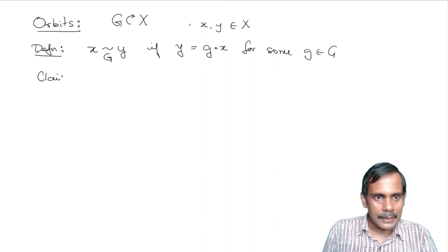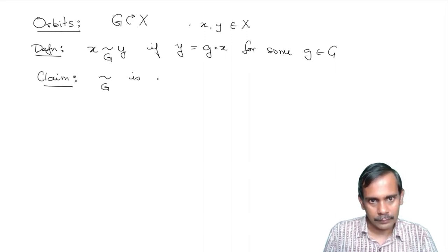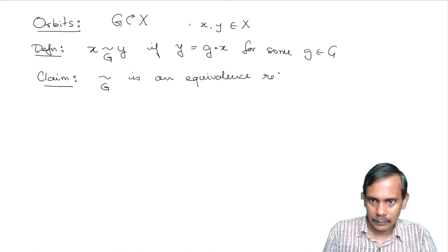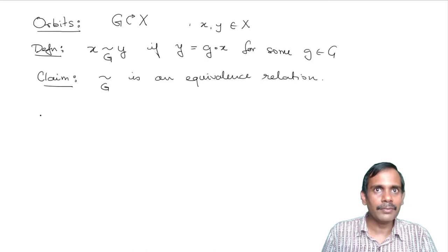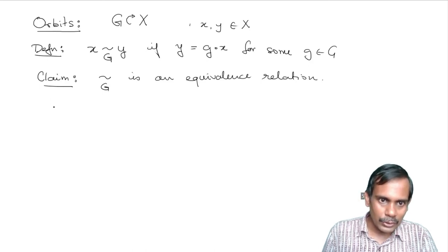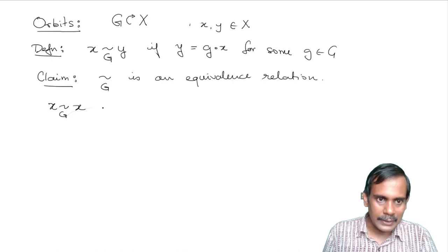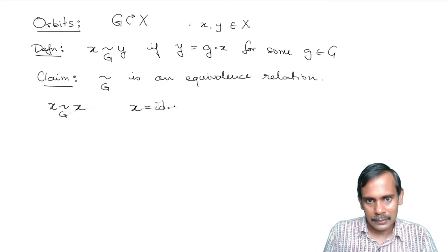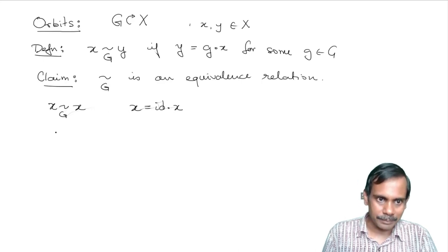I claim this relation is an equivalence relation. I need to show it's reflexive, symmetric, and transitive. For reflexivity, X is related to X because X equals identity dot X, using the identity axiom.